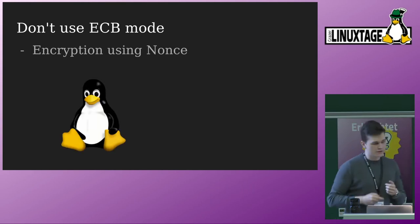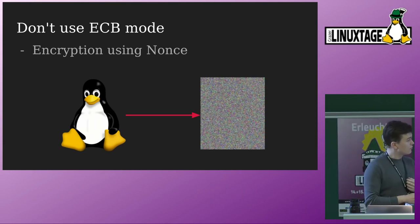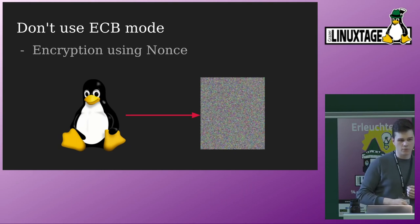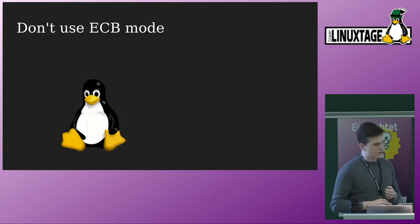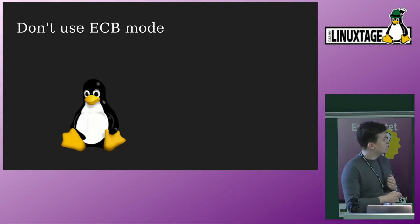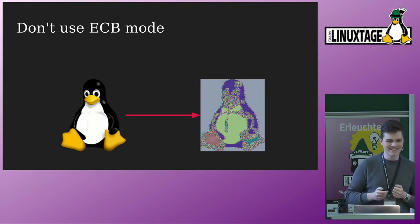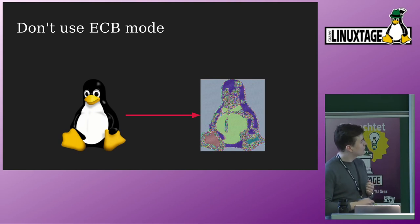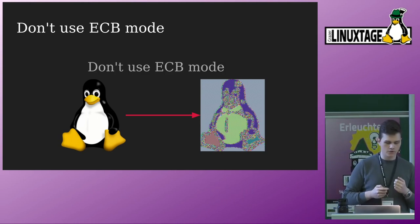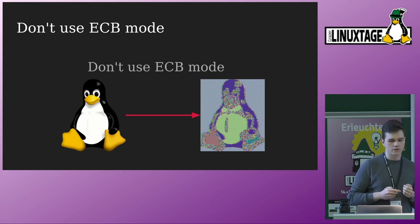What we want our encryption to look like is shown with the Tux image — after encryption, nobody should be able to reconstruct the original. The issue with ECB mode is that the same input leads to the exact same output. So if I have a chunk of input pixels, this leads to the exact same output pixels, and the image still looks recognizable. This isn't secure, because all white or black pixels lead to the exactly same output — which is why we should stay away from ECB mode.